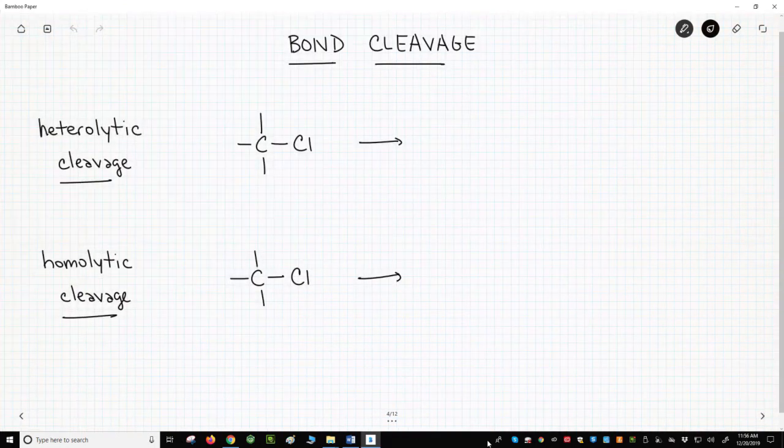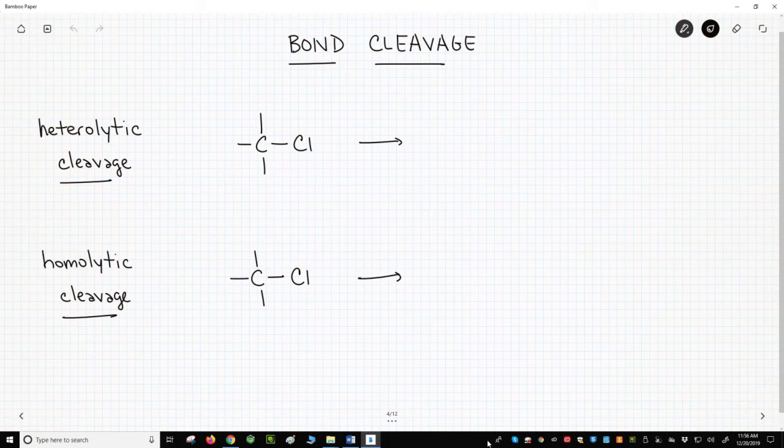On the screen, we have two structures. These aren't complete structures, but they do highlight a carbon-chlorine bond. That carbon is attached to other things. I haven't shown them, but it has four bonds and a full octet.